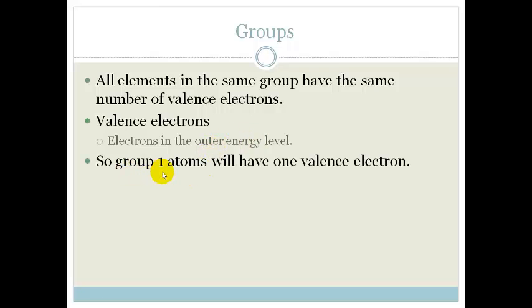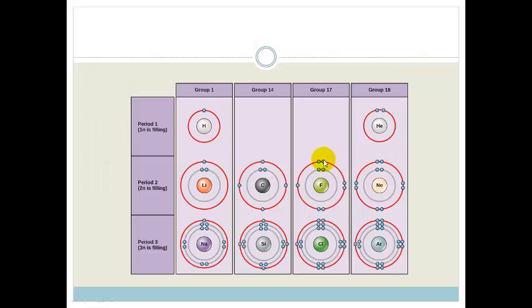Okay so group 1 atom will have 1 valence electron, group 2 will have 2, etc. So if we look at this you can see that group 1 has got 1 valence electron. So you'll see that even sodium which has got electrons in the inner orbital still has only got 1 valence electron.